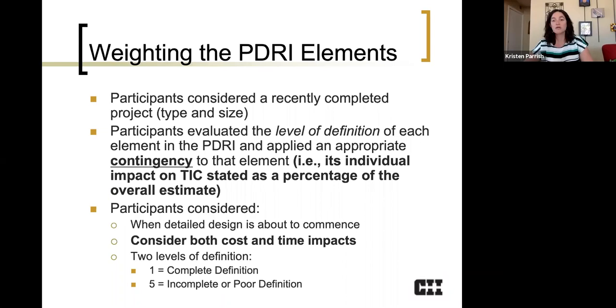So when a practitioner decided I'm going to contribute to this research effort, I'm going to help, what they had to do was they would take a project that they had recently completed and they would evaluate the level of definition for each element in the PDRI and apply contingency to that. So that contingency would be that element's individual impact on total installed cost and they would state that as a percentage of the overall estimate. They would do this at a point in time, go back in their mind to think about right before detailed design is going to begin.